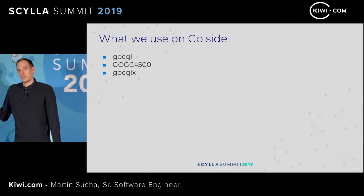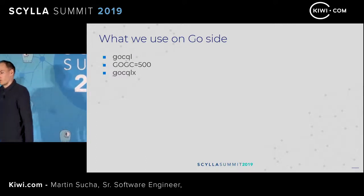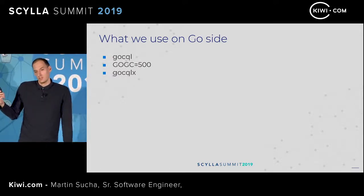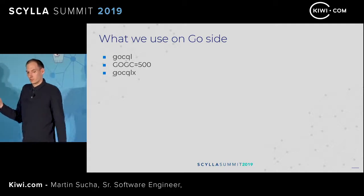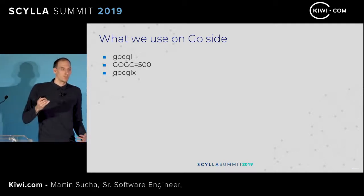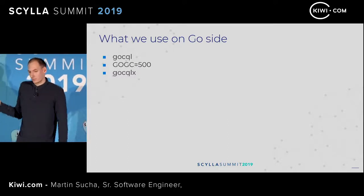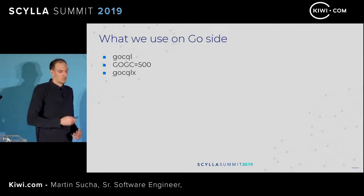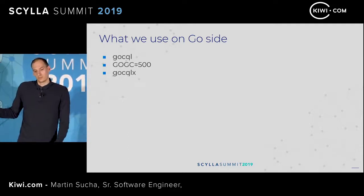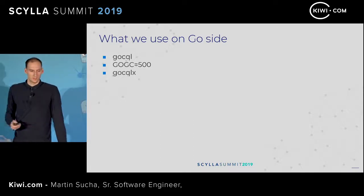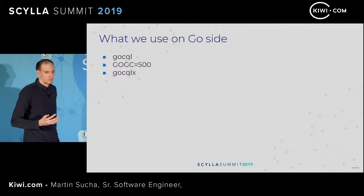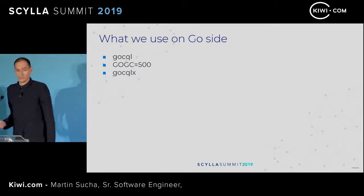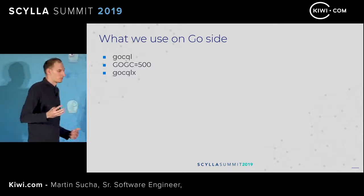We contribute our changes back to upstream. I recommend you use the Scylla driver and I hope that in the future the Scylla driver and the original GoCQL match so that contributing becomes easier. We also use the GoCQLX library, which is nice — we build queries with it, map structures to database rows and query parameters. We also had to tune our garbage collector so that it runs less frequently, which helps with CPU usage.